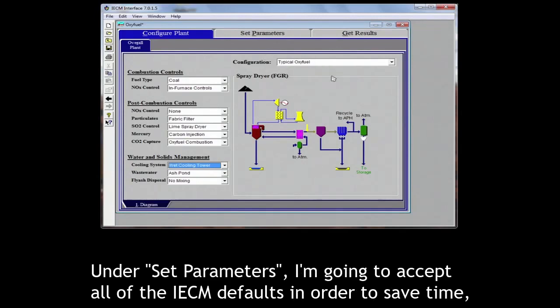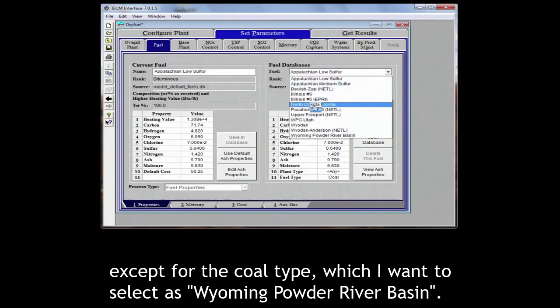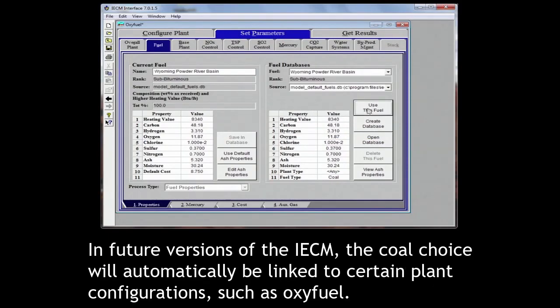Under set parameters, I'm going to accept all the IACM defaults in order to save time, except for the coal type, which I want to select as Wyoming Powder River Basin. In future versions of the IACM, the coal choice will automatically be linked to certain plant configurations such as oxyfuel.